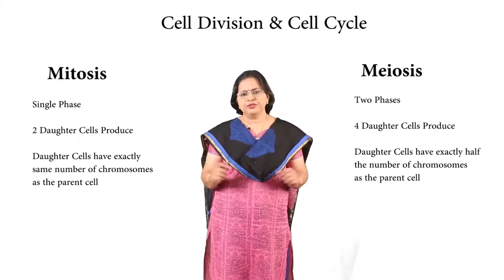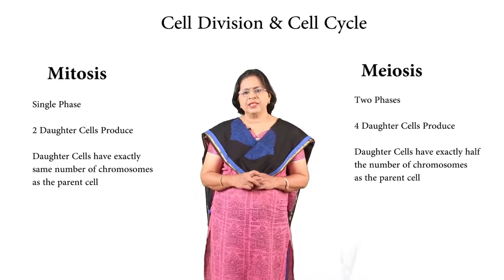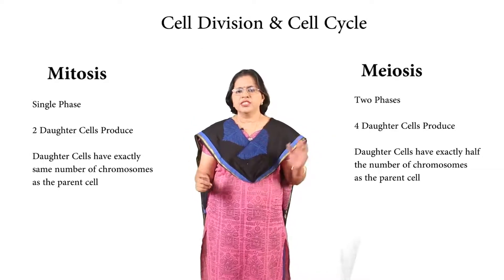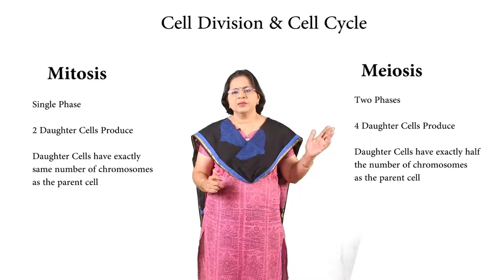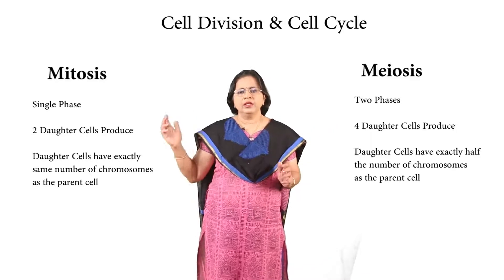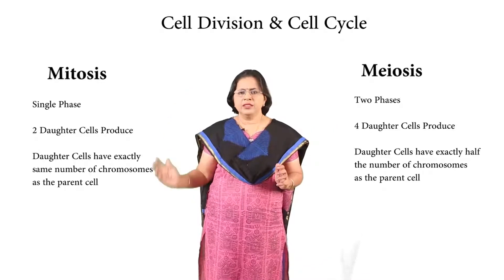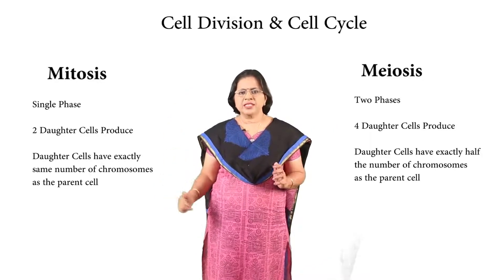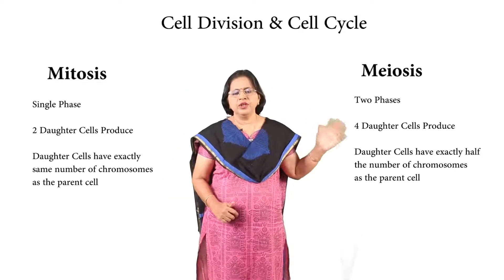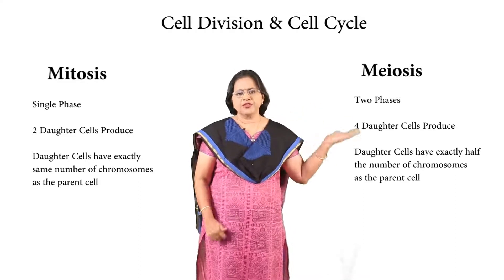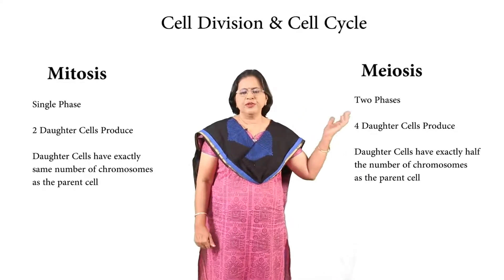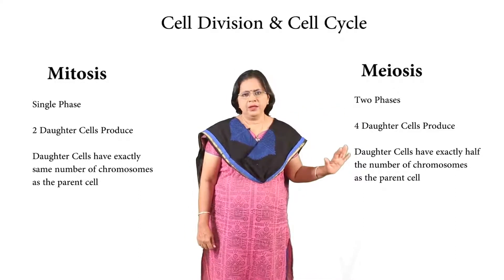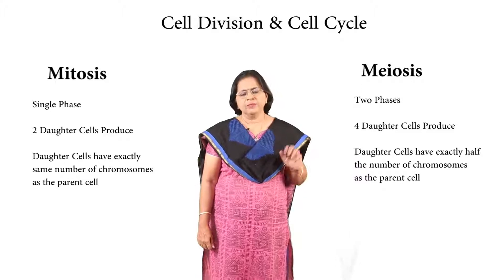Two major differences that we see in mitosis and meiosis: in mitosis there is one entire single phase, whereas in meiosis there are two phases — the first phase being the reduction phase, and the second phase being typical mitosis.